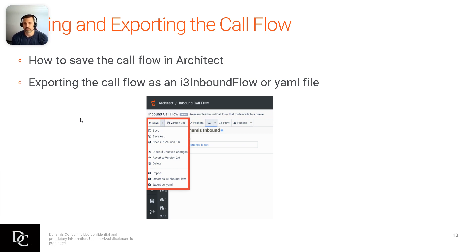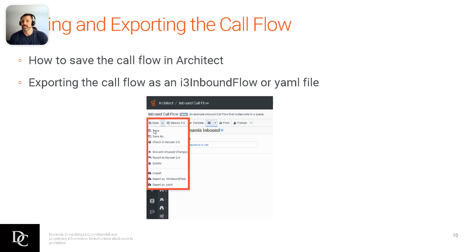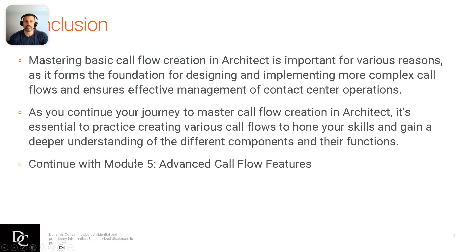To save in Architect, along the top ribbon there is Save, Save As, check in the version, discard changes, revert to a previous version, and delete, import, and export. Saving will not publish it — you're just saving your work, so if you have an internet outage or accidentally close the screen, it's still saved. You can also revert unsaved changes or revert to a previous version, which will clear out those saved changes so you can start over.